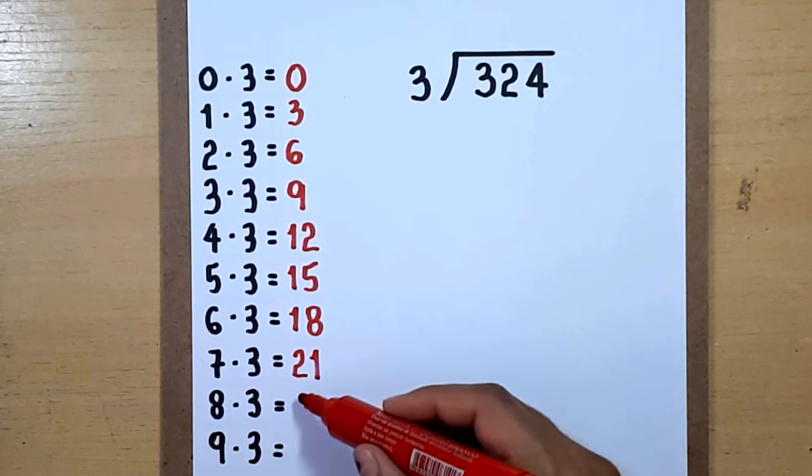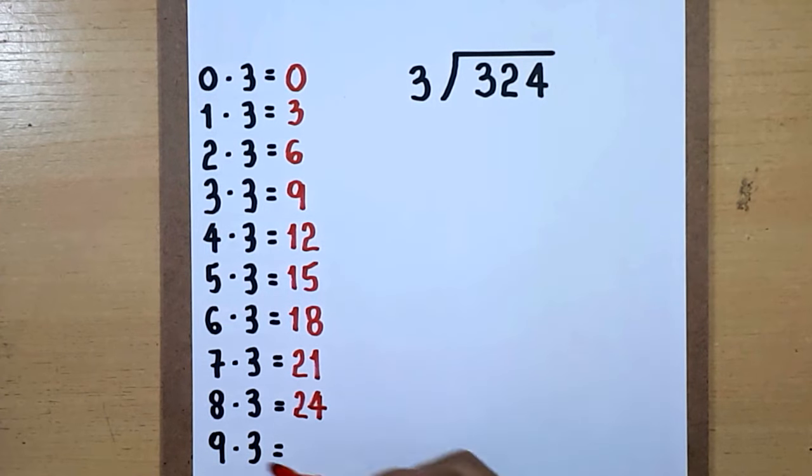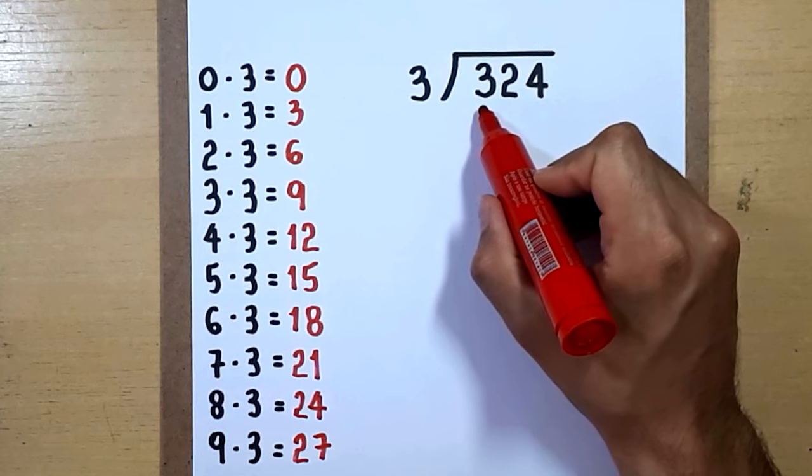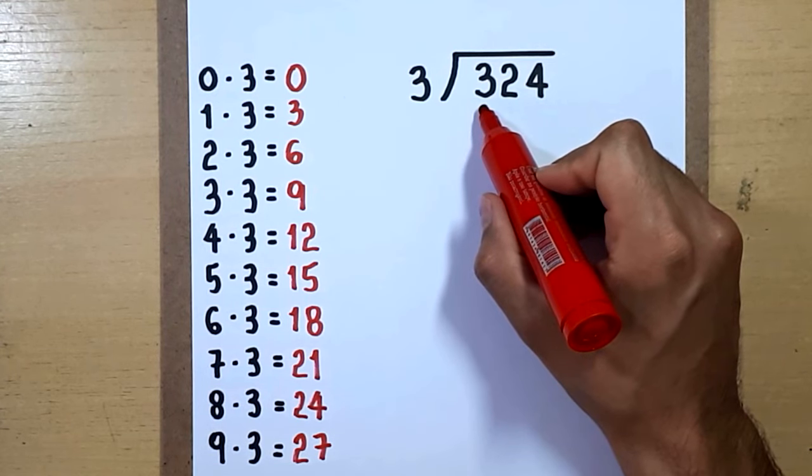6 times 3 is 18, 7 times 3 equals 21, 8 times 3 is 24, and 9 times 3 is 27. Okay, we start by looking at this first digit. It's a 3. We ask the question: